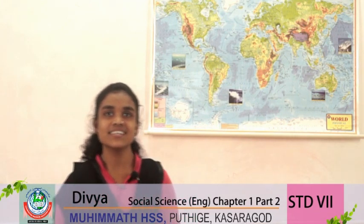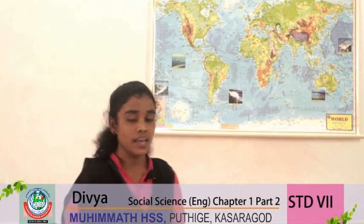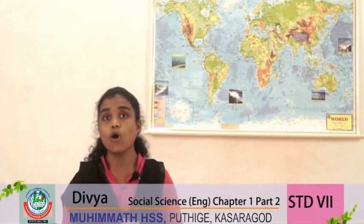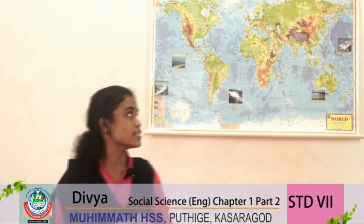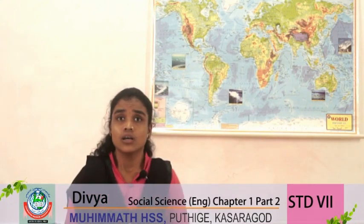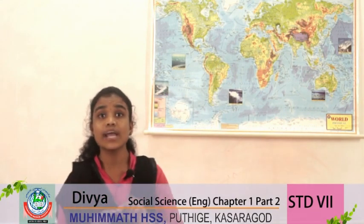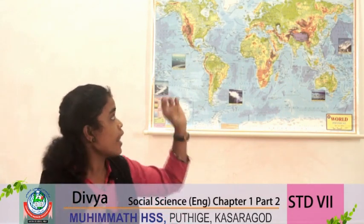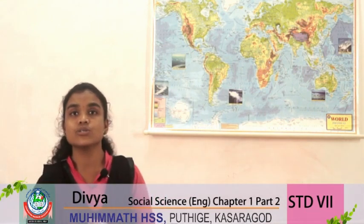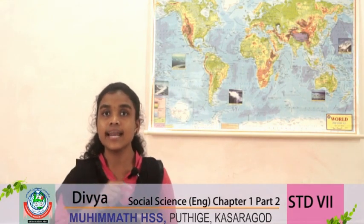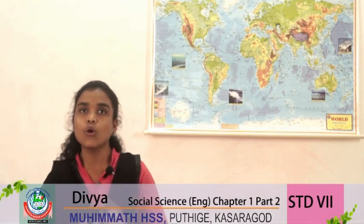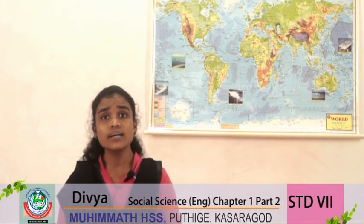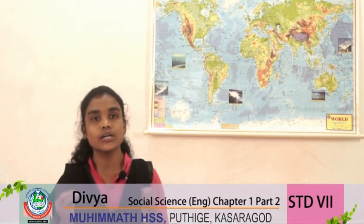Next, we are going to discuss the search for sea routes. We already discussed that Constantinople was captured by the Ottoman Turks. Constantinople was the center, the gateway between Asia and Europe. When it was captured by the Ottoman Turks, it blocked the land route between Europe and Asia — the trade route between Asia and Europe was blocked by the Ottoman Turks by capturing Constantinople.